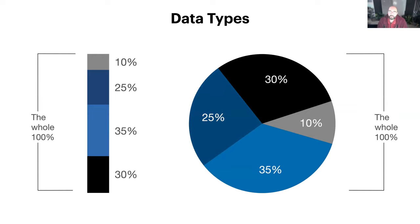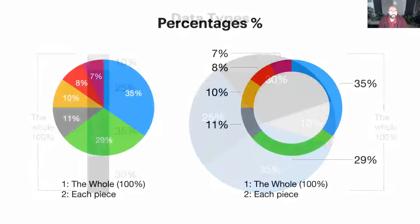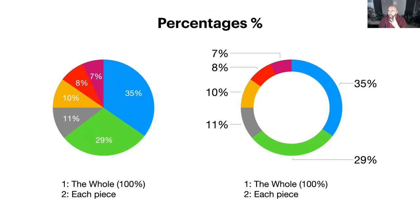Now we start seeing the importance of being able to see the different parameters and different colors. When we're talking about percentages, a great way to present these are the pie charts. You can see them as a whole chart or as a donut — a chart with a hole in the middle. It's basically the same idea. You are comparing each piece of the pizza to the whole. That's the aspect of percentage.